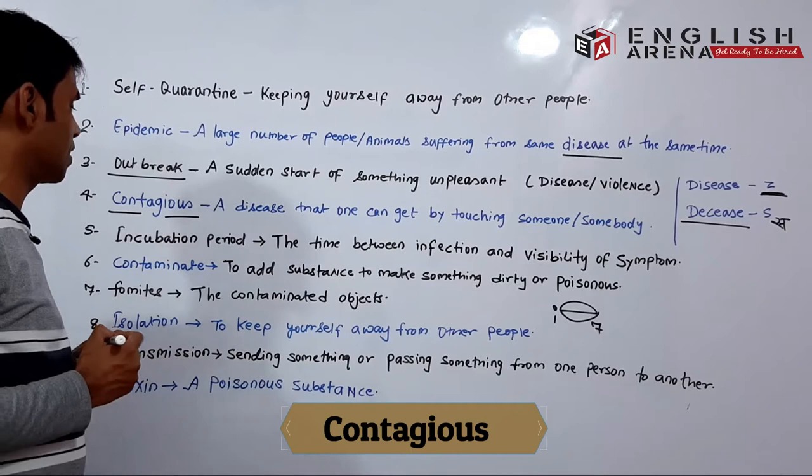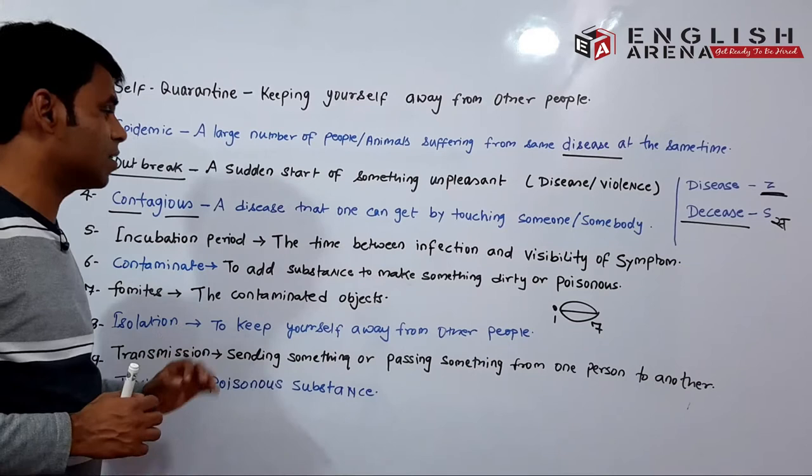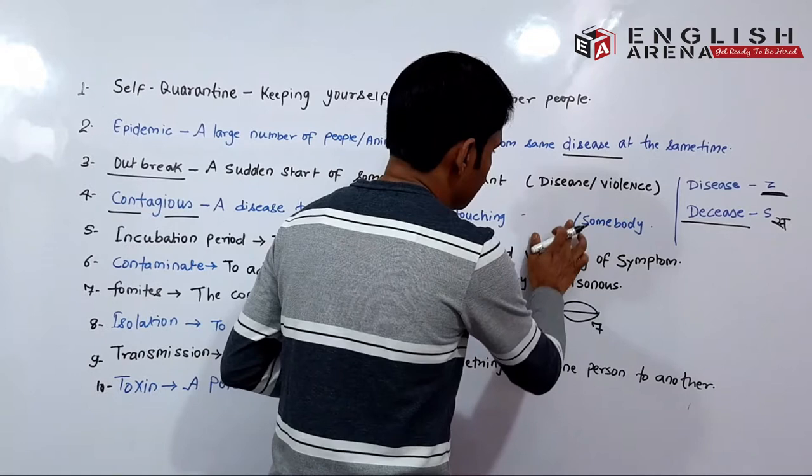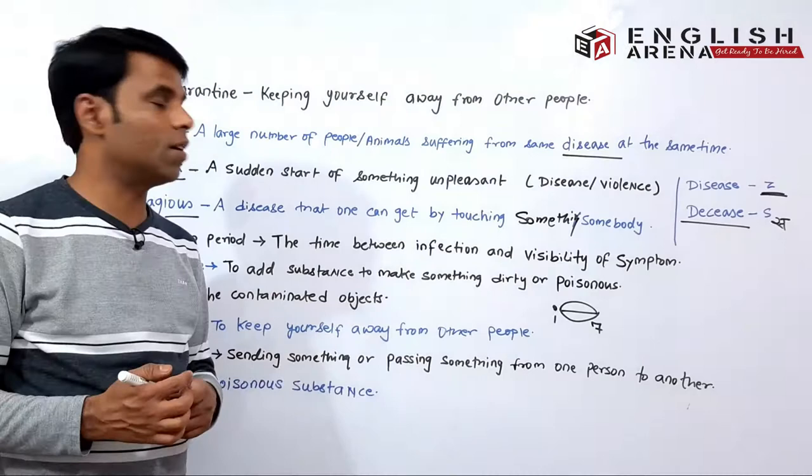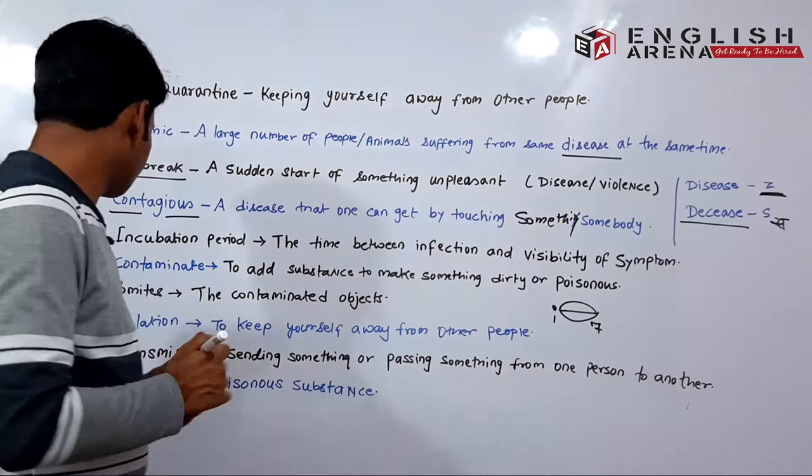The next word is 'contagious.' The pronunciation of this word is 'contagious' — not 'contagious' or something else, but 'contagious.' Contagious means a disease that one can get by touching something or somebody. Kisi cheez ya kisi vyakti ko chhoone se agar koi rog failta hai, to use hum kehte hain 'contagious.' Isko hum kehte hain 'sankramak.'